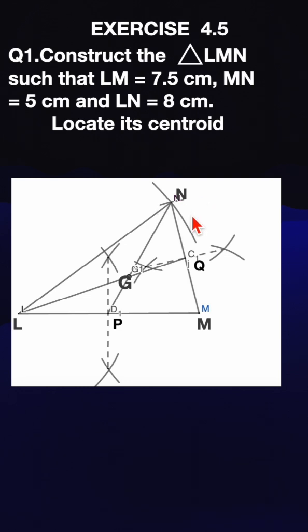From point M with the compass, draw an arc at 5 centimeters. Draw another arc from L at 8 centimeters. At the point of intersection, join to get the triangle.